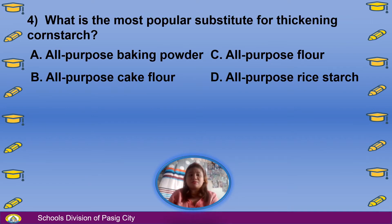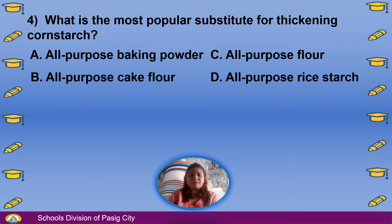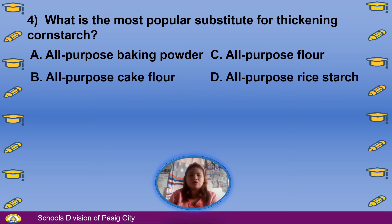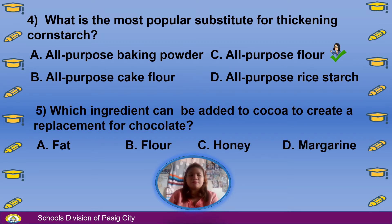Number 4: What is the most popular substitute for thickening cornstarch? A. All-purpose baking powder, B. All-purpose cake flour, C. All-purpose flour, D. All-purpose rice starch. The answer is C, All-purpose flour.